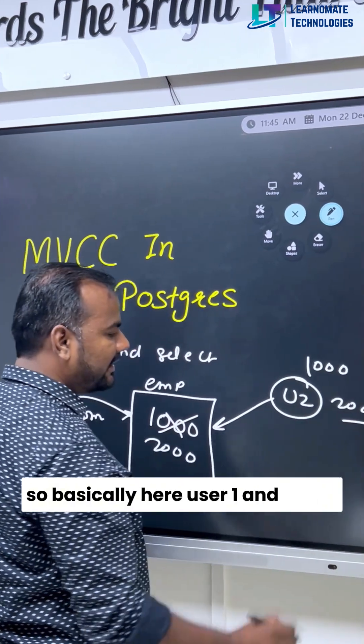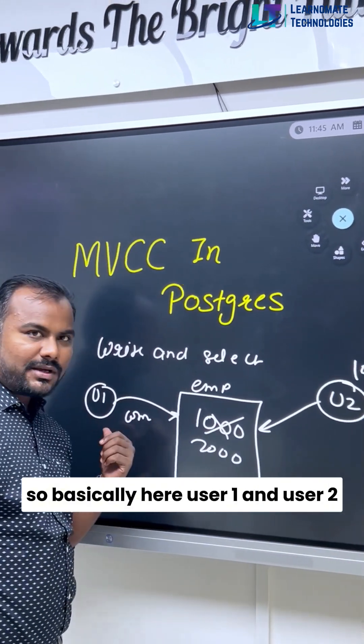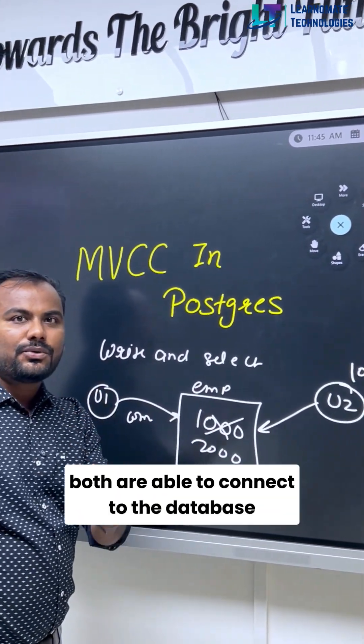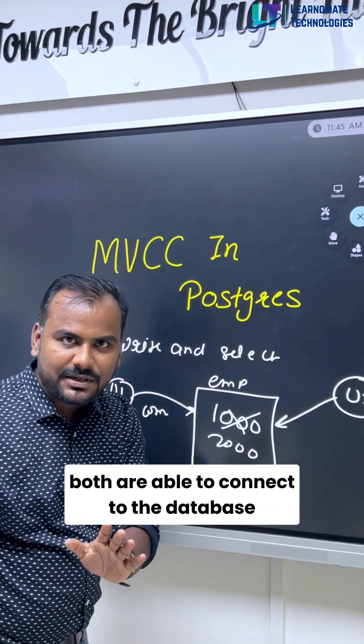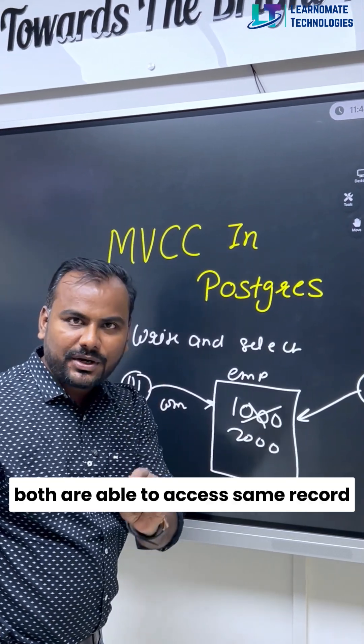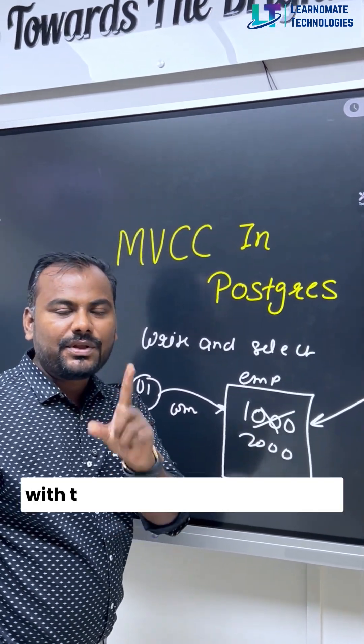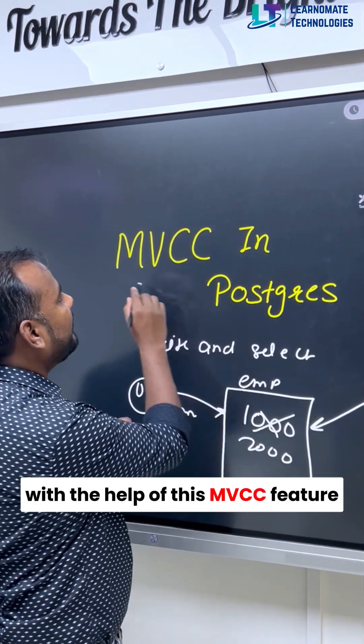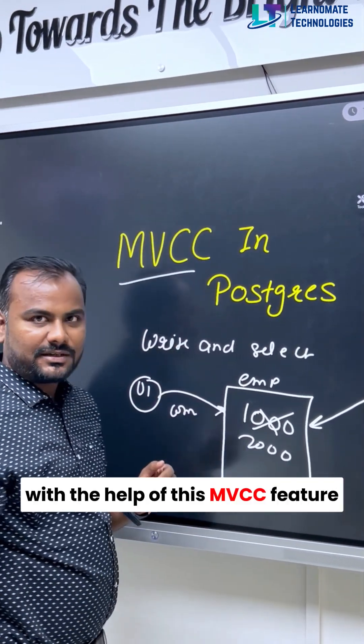So basically, user one and user two both are able to connect to the database, and both are able to access the same record with the help of this MVCC feature.